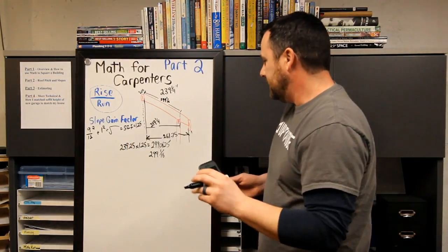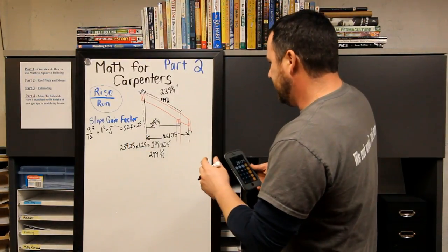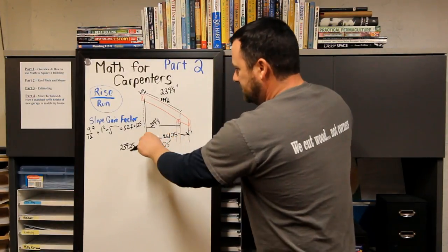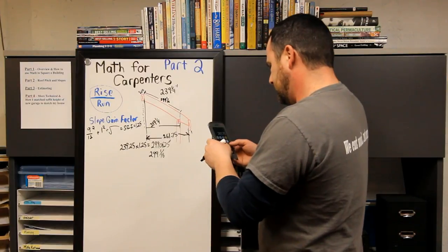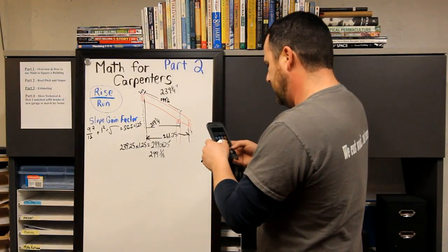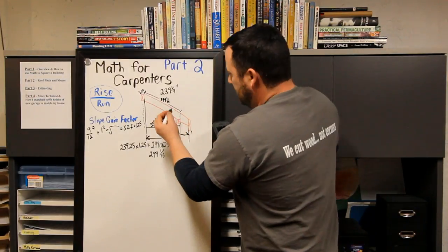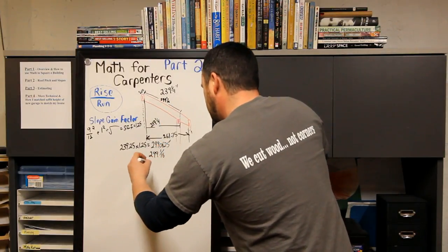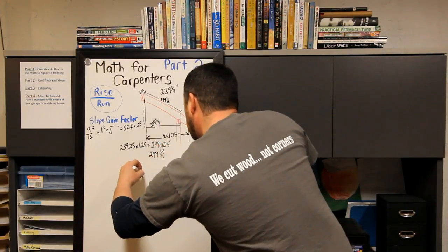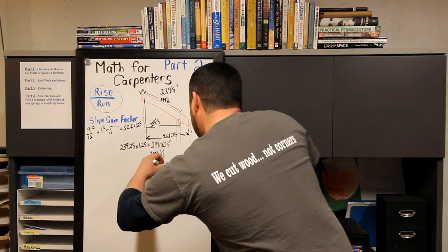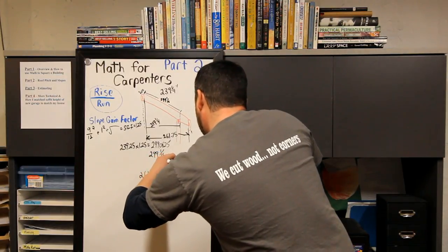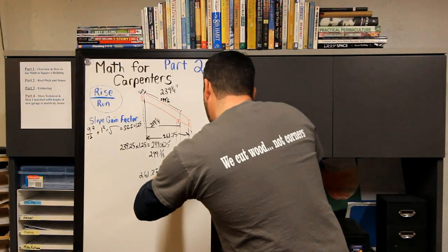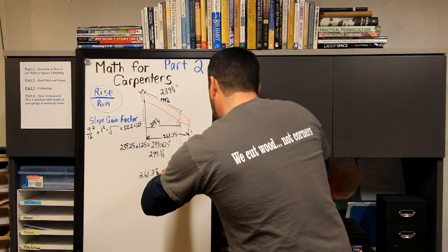That's your horizontal run, so you take this times your slope gain. 261.75 times 1.25 equals 327.1875 inches.